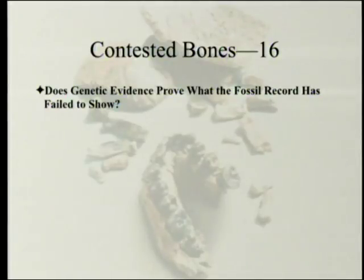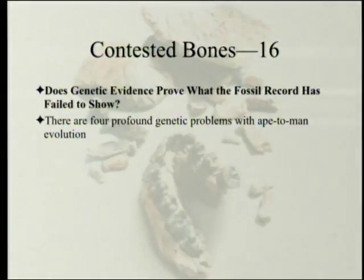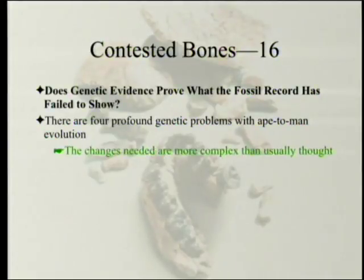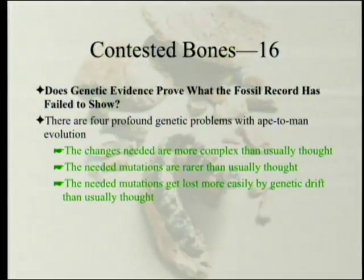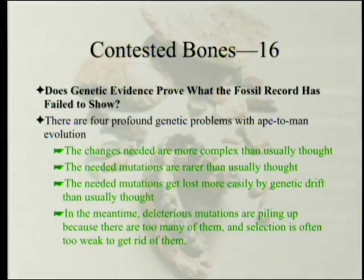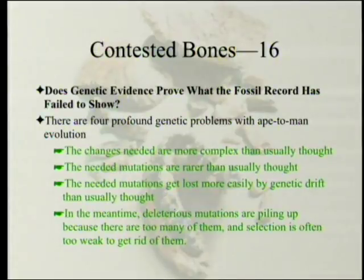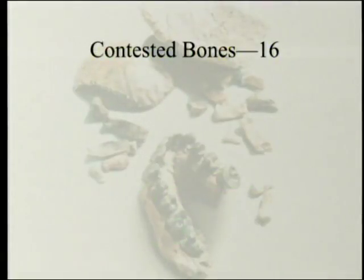The first part of the chapter we covered last week starts with: does genetic evidence prove what the fossil record has failed to show? The first part of the chapter is actually problems with evolution rather than problems with creation. There are four profound genetic problems with ape-to-man evolution: the changes needed are more complex than usually thought; the needed mutations are rarer than usually thought; the needed mutations get lost more easily by genetic drift; and finally, deleterious mutations are piling up because there are too many of them and selection is often too weak to get rid of them. That's the central core of genetic entropy, which is John Sanford's particular specialty.